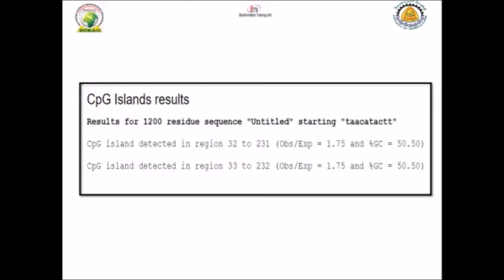For example, the result shown here indicates that the region from nucleotide 32 to nucleotide 231 has an observation/expectation value of 1.75 and a GC content of 50.5%, which is more than 50%. This means that this region could have a CpG island and could be a potential upstream 5' region of a gene in vertebrates. It is very easy to find CpG islands in your sequence and detect where they could exist.